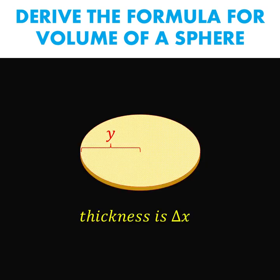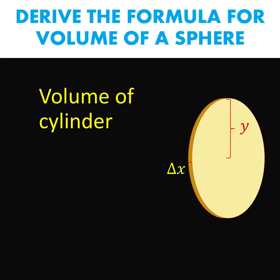We can also position our disk sideways. Still, the radius is denoted as y and the thickness of our disk is delta x. So what is the volume of this disk? Our disk is a cylinder. The base is circular.